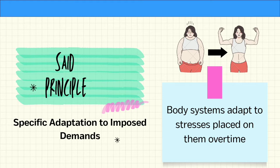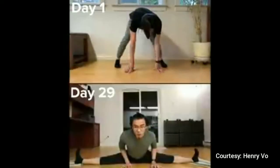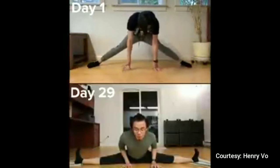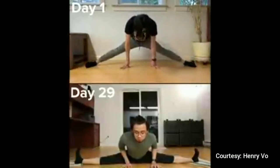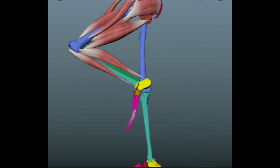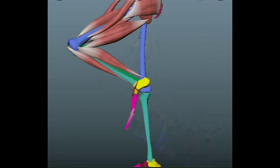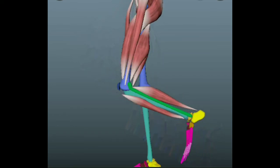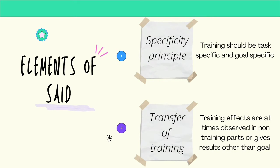The SAID principle — Specific Adaptation to Imposed Demands — states that body systems adapt to stresses placed on them over time. For example, if you have never performed a split and you try to stretch your legs apart to perform it consistently, by the end of the month you will be able to perform the split. This happens because your legs get accustomed to the frequent stretches.